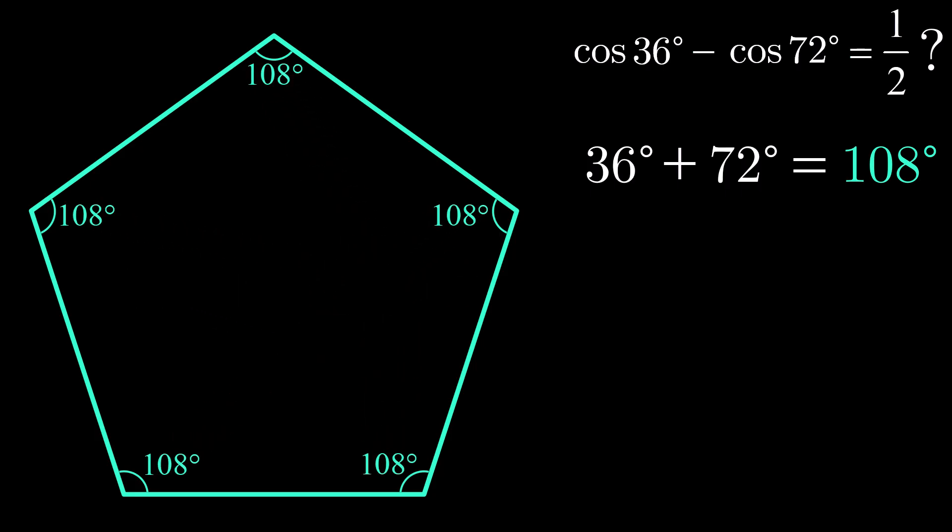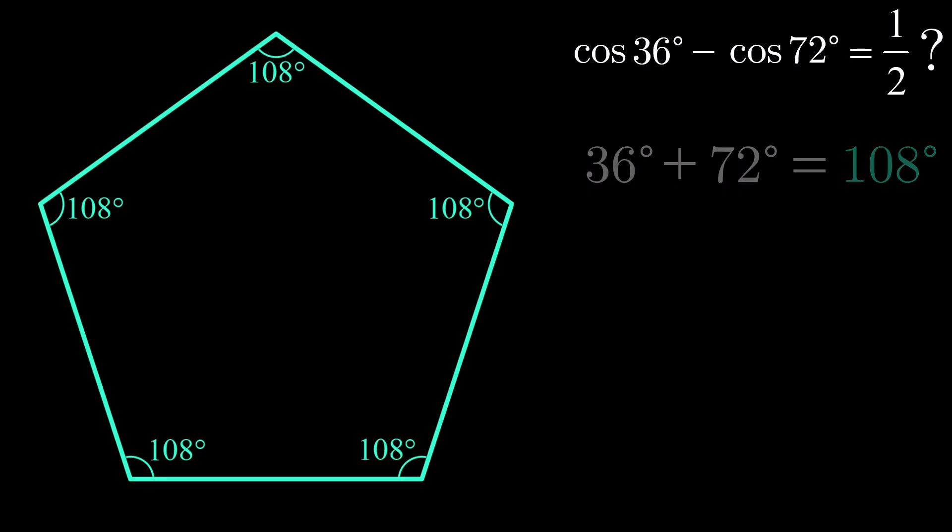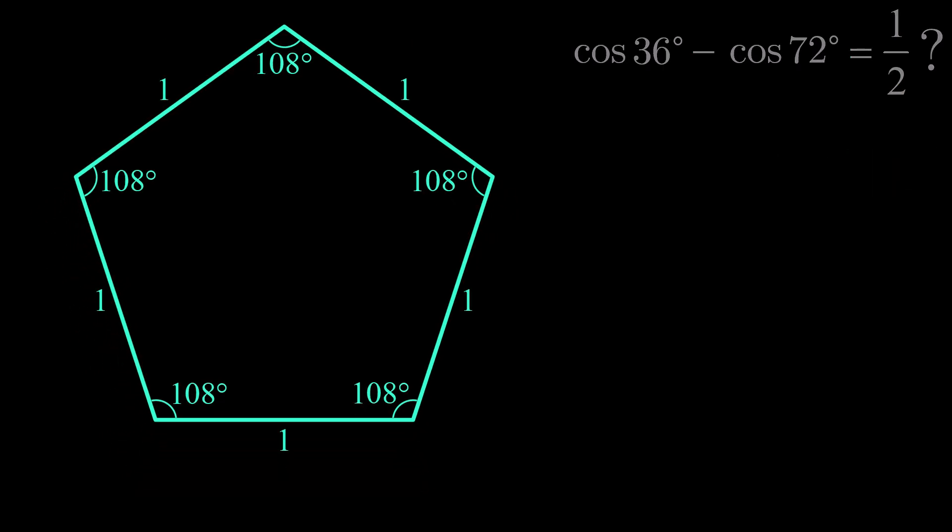We could choose any side length for our pentagon, but for simplicity, let's give each side a length of 1. By symmetry, dropping a perpendicular from one of the pentagon's vertices to the opposite side splits the opposite side in half, and also splits the angle at the vertex in half, giving two 54 degree angles.